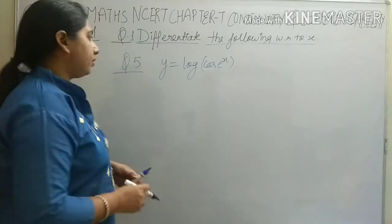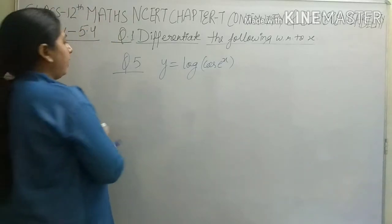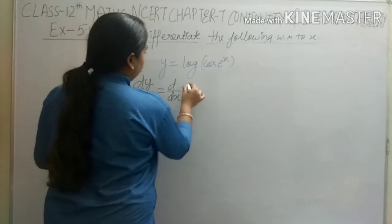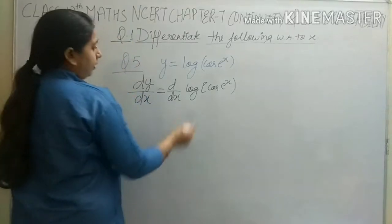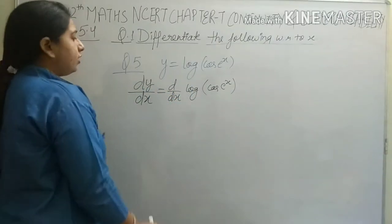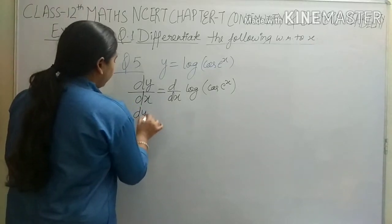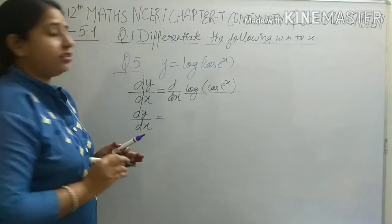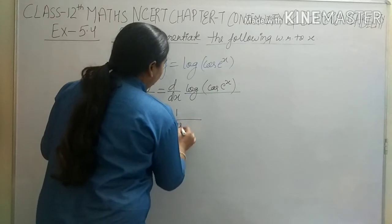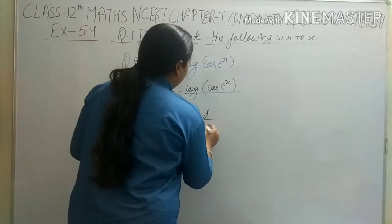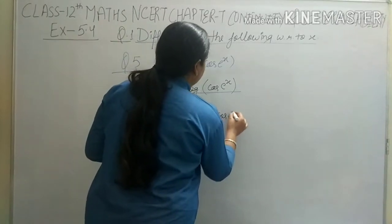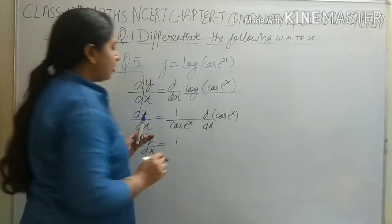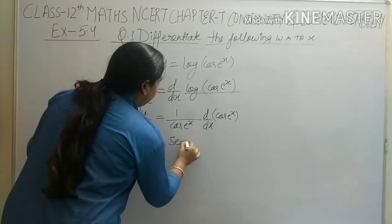Question number 5: y equals log(cos(e^x)). Differentiate it with respect to x. We will get dy/dx equals differentiation of log(cos(e^x)). Differentiation of log gives 1 upon cos(e^x). Now we will differentiate cos(e^x).